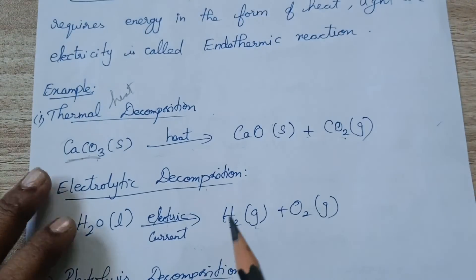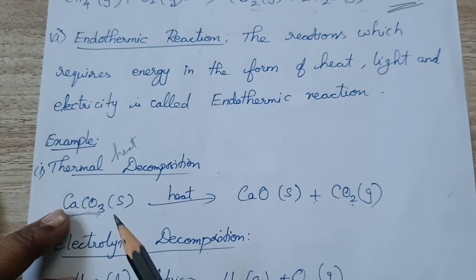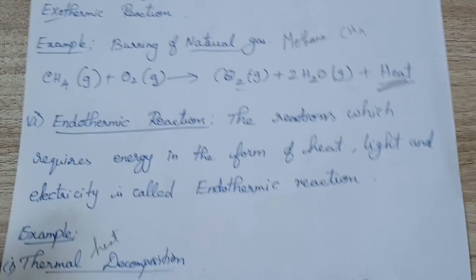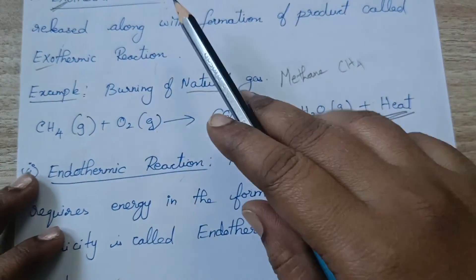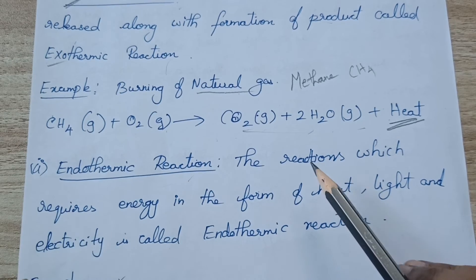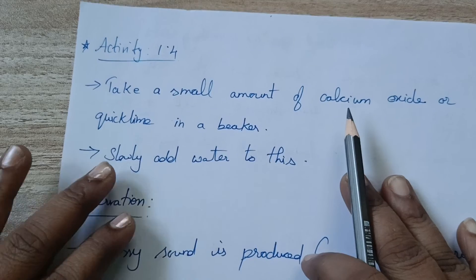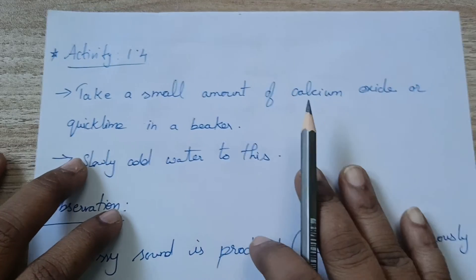So these are the two types of chemical reactions based on temperature: exothermic reaction and endothermic reaction. Let's move to Activity 1.4.